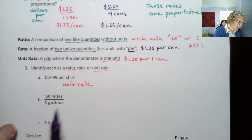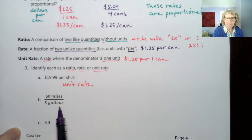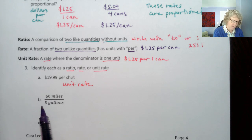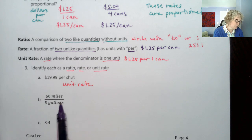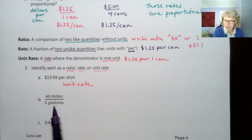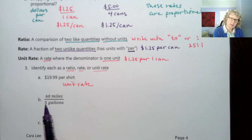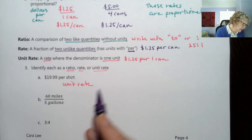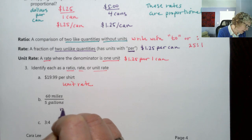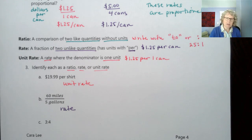Then 60 miles over five gallons. Well, as we were talking about, this could also be read 60 miles per five gallons. And it is a rate because we also have two different units, miles per gallon. But it's not a unit rate because we don't know how many miles we can go on a single gallon unless we divide it. So this is a rate, but not a unit rate. So that's a regular rate.